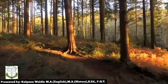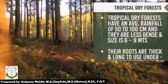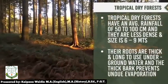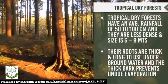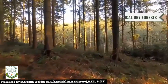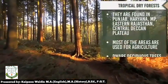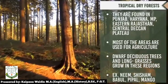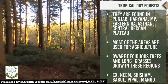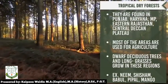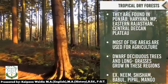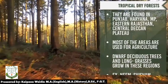Now comes tropical dry forest. It has an average rainfall of 50 to 100 centimeters. Trees are less dense and 6 to 9 meters in size. Their roots are thick and long to access underground water, and thick bark prevents undue evaporation. They are found in Punjab, Haryana, Madhya Pradesh, eastern Rajasthan, and central Deccan Plateaus. Most areas are used for agriculture. Drought-deciduous trees and long grasses grow in these regions — for example, neem, sesham, babool, peepal, and mango.